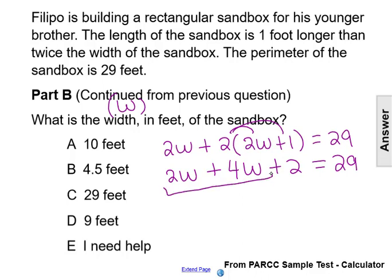We'll then combine like terms. 2w plus 4w is 6w, then plus 2 equals 29.